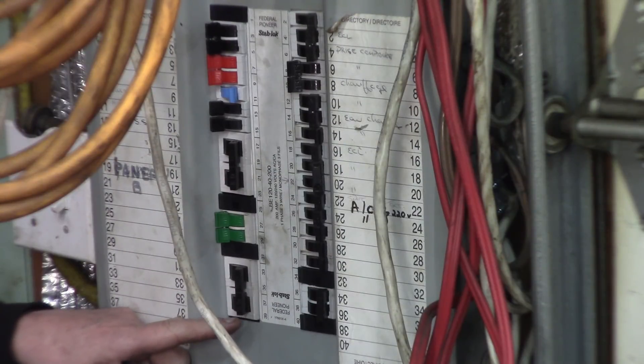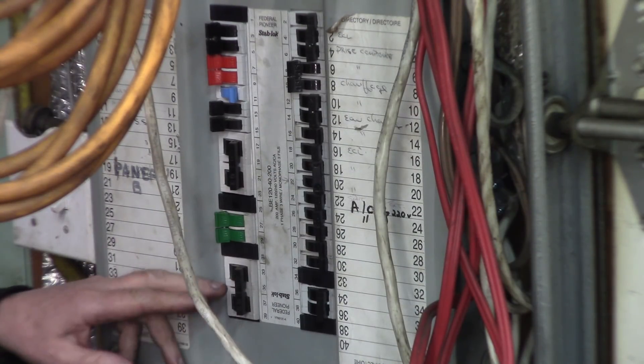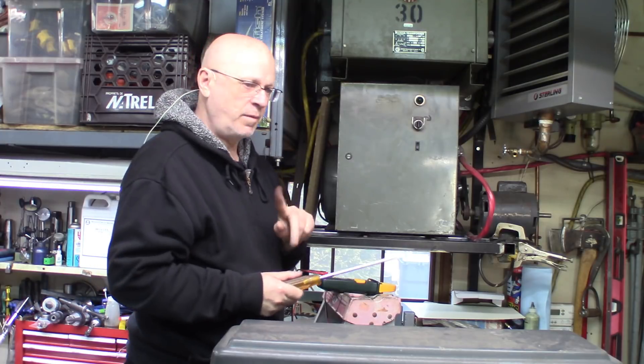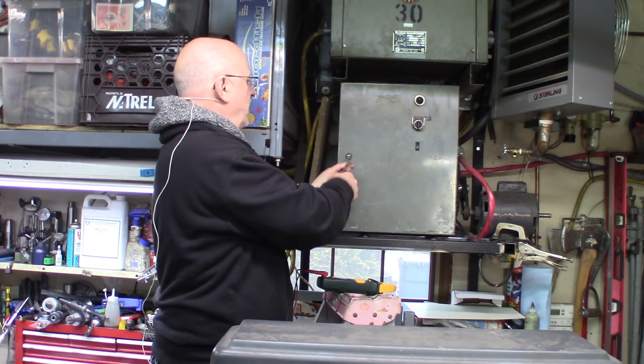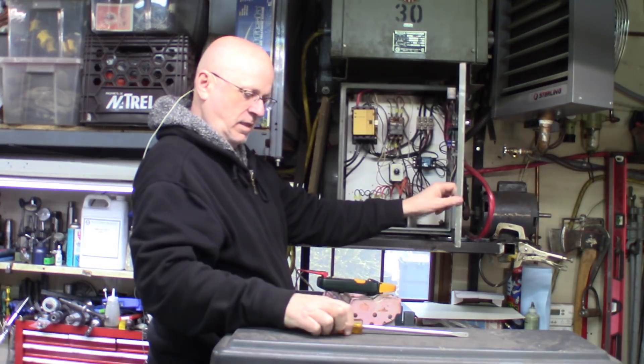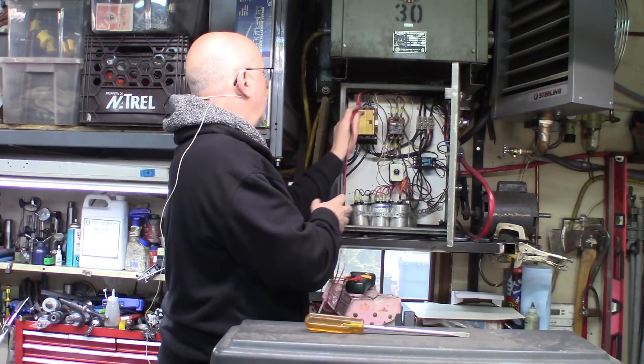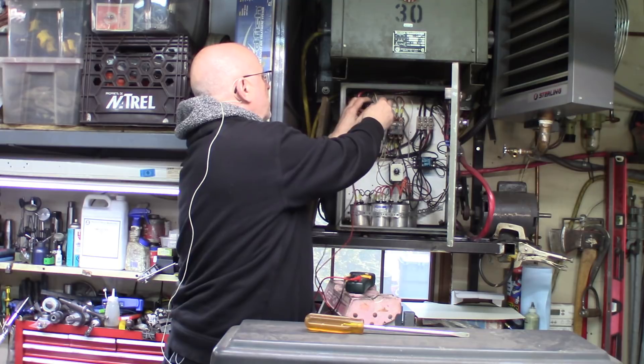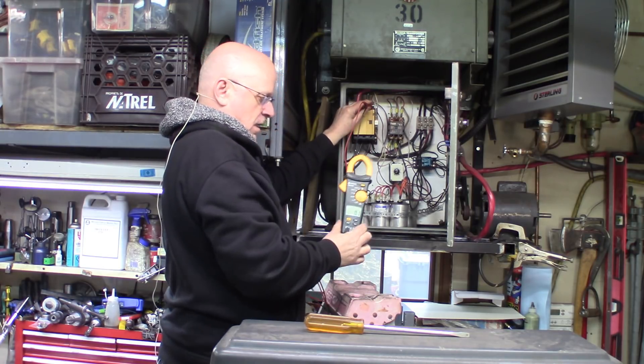If you want to play it safe, which is always what I would recommend, just take the power off before working on electrical devices. You want to be sure that it's turned off. There we go, 220 volts now does not exist.